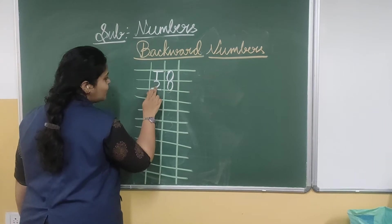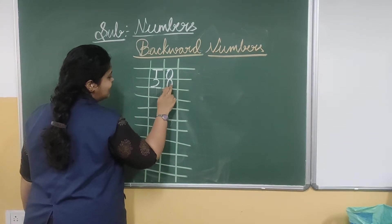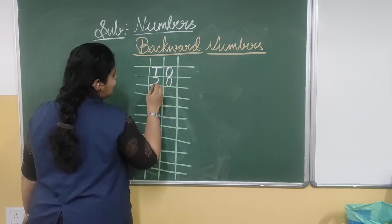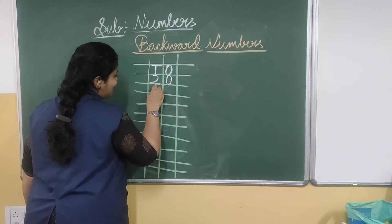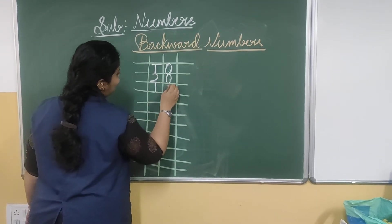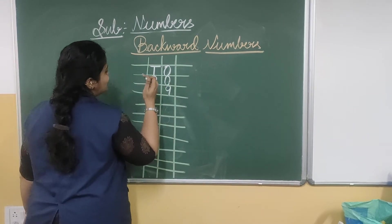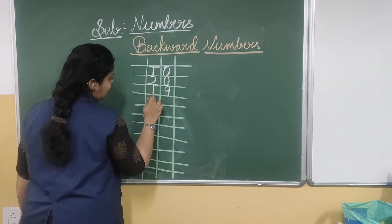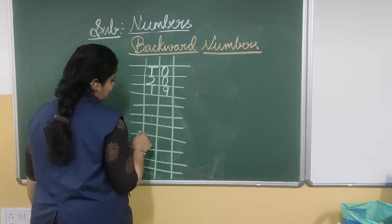That is 2 is 20 and 0 is 0. So 20 before — the digit before 2 is 1, and the digit before 0 is 9. So the number before 20 is 19. That is 1, 9 — 19.